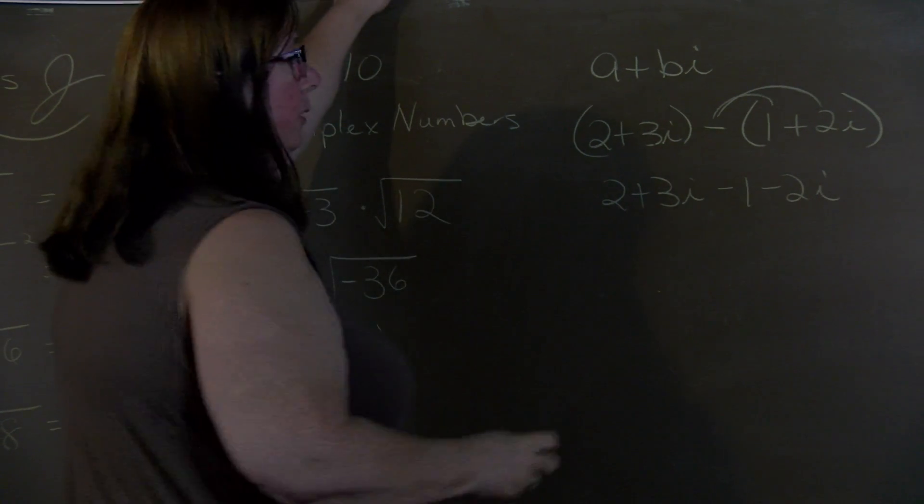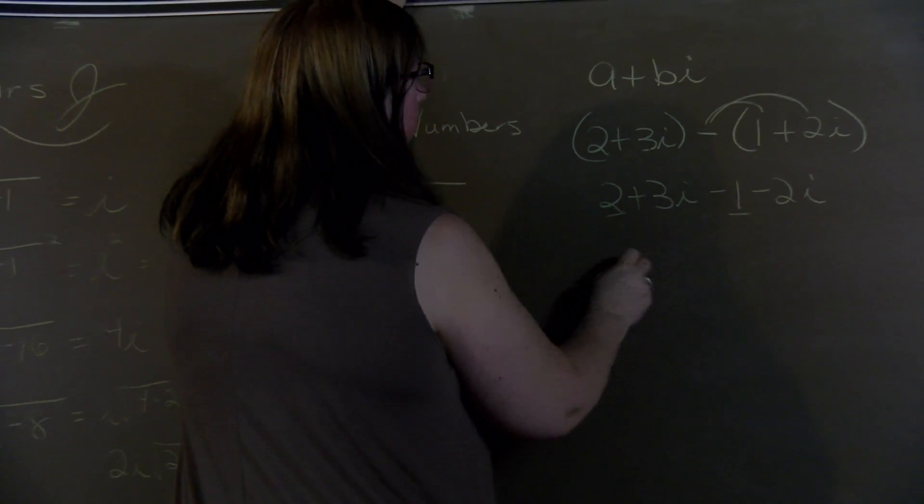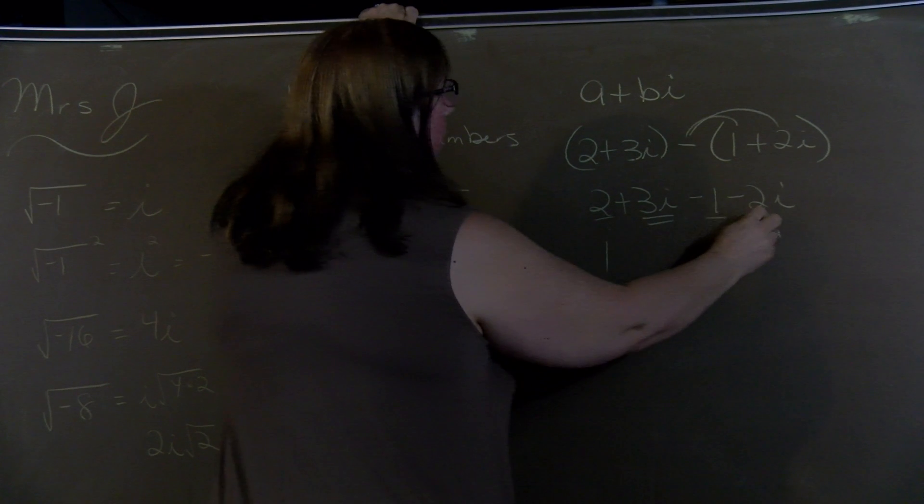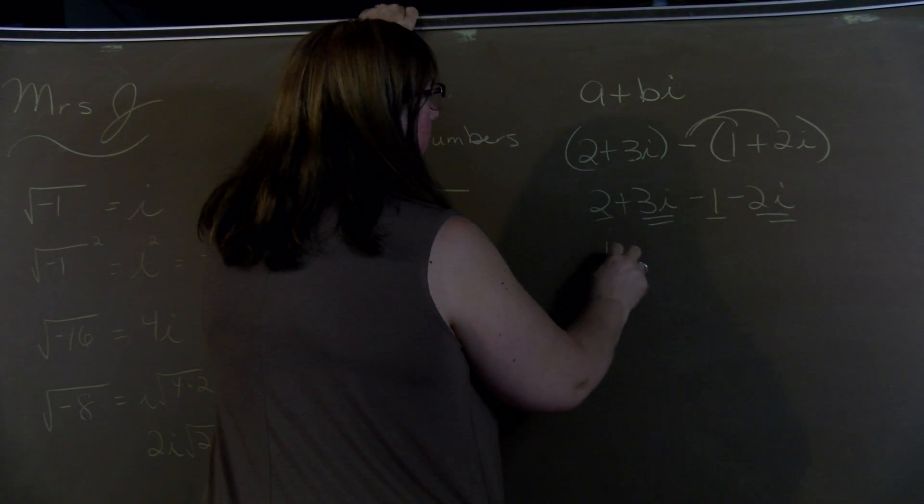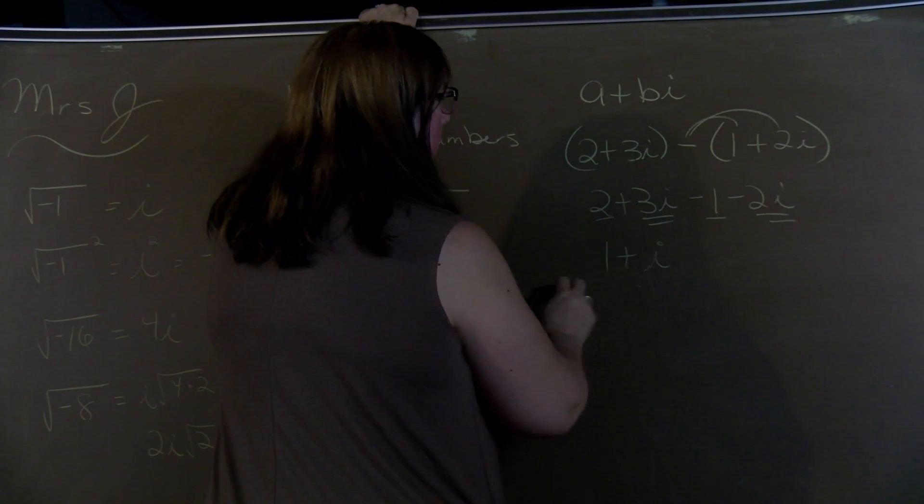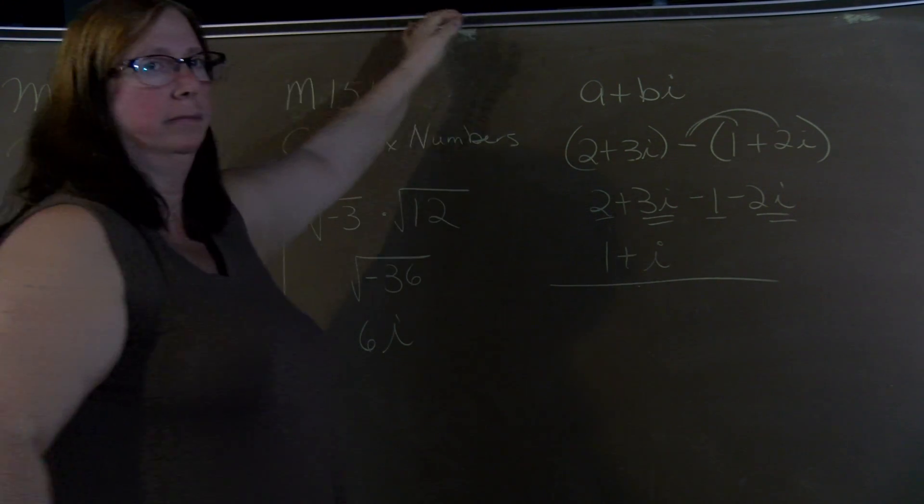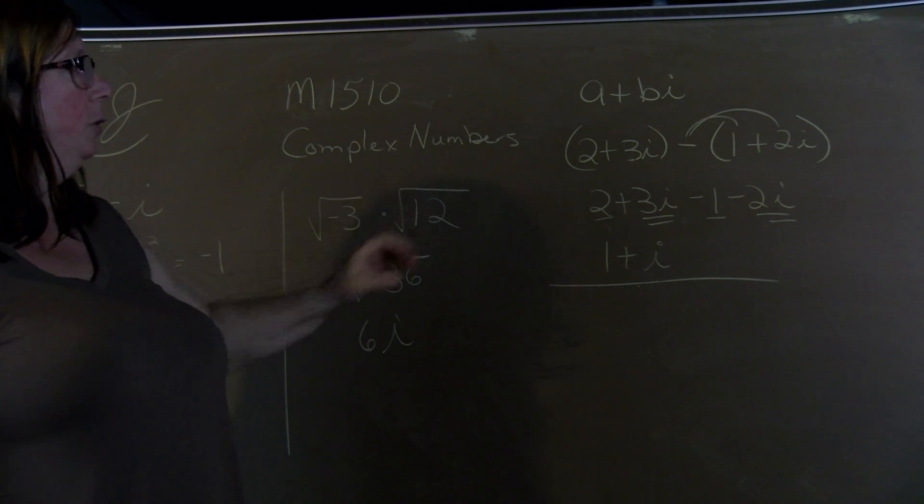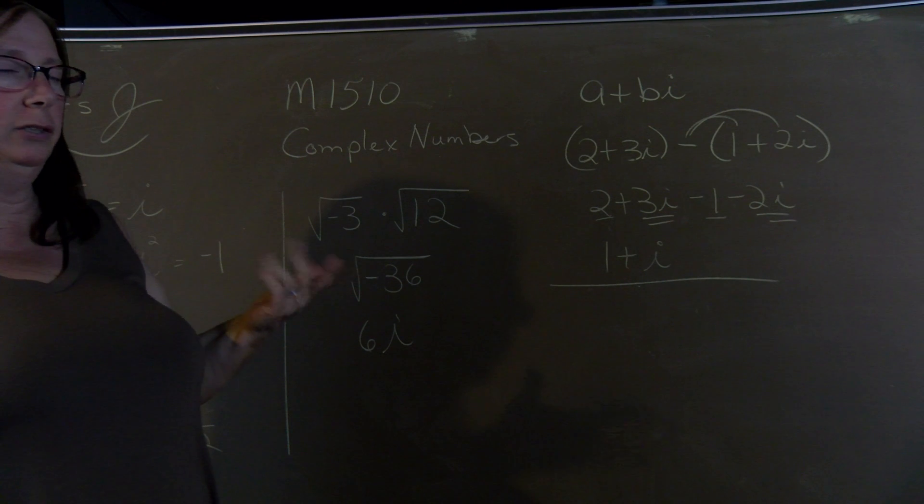And then combine your like terms. 2 minus 1 is 1. 3i minus 2i is 1i. So adding and subtracting, just combine like terms.